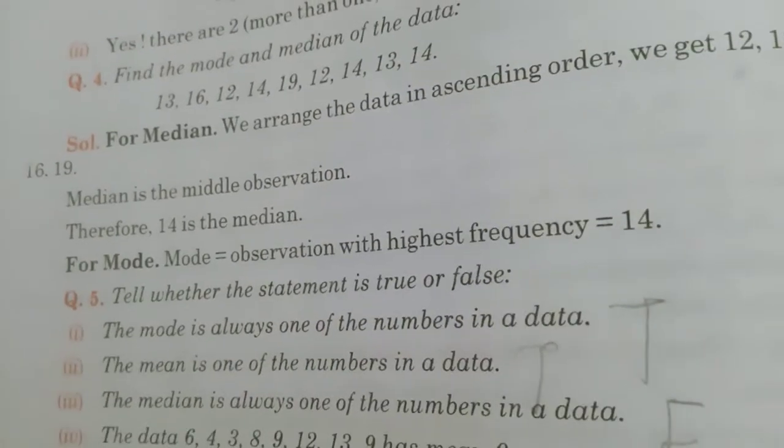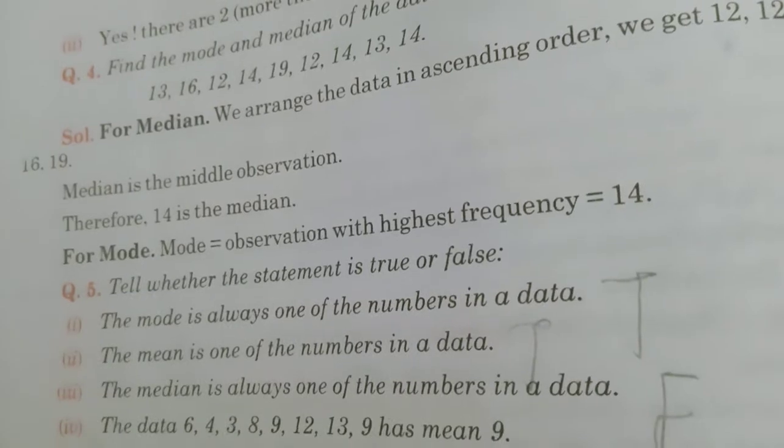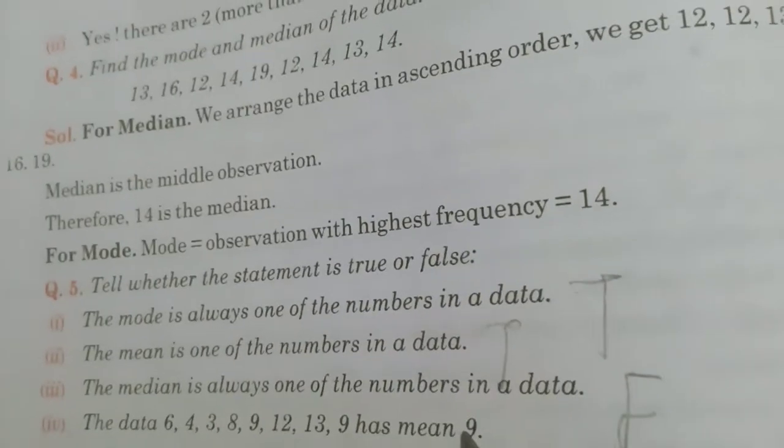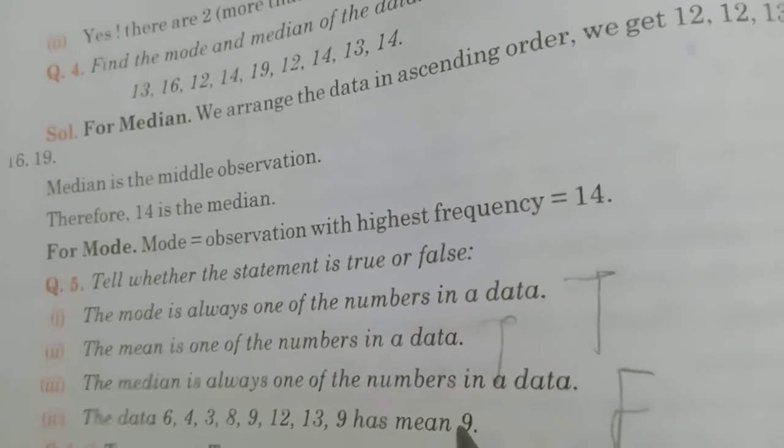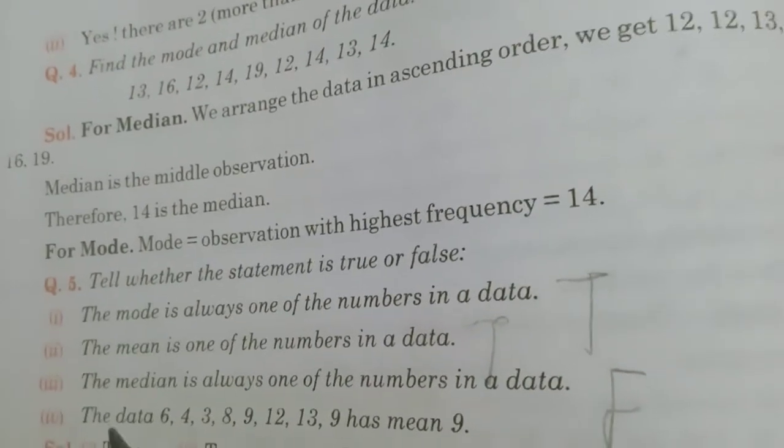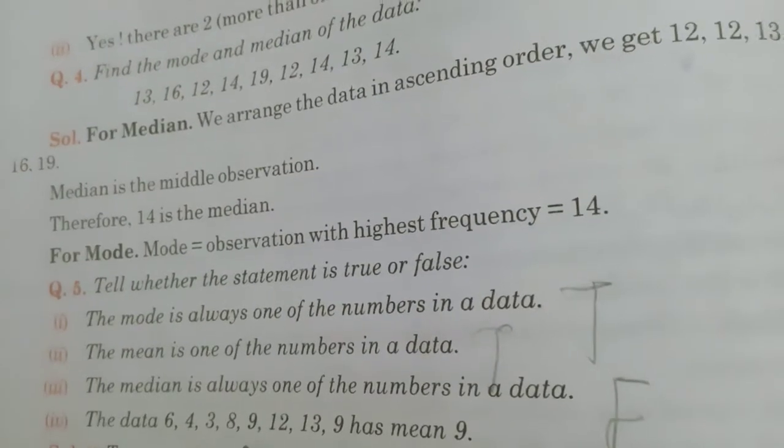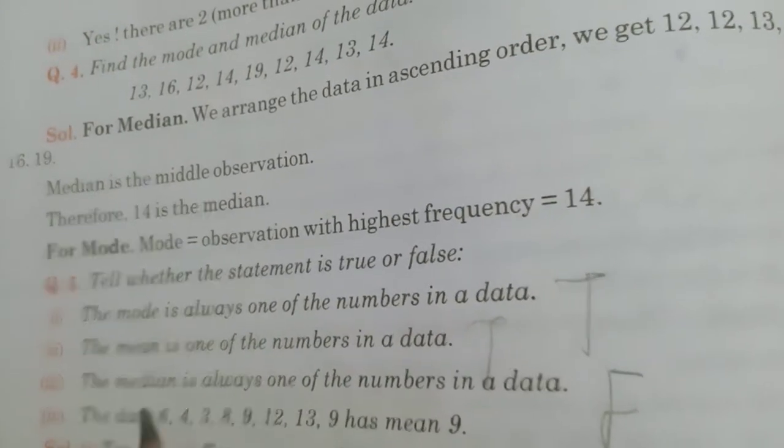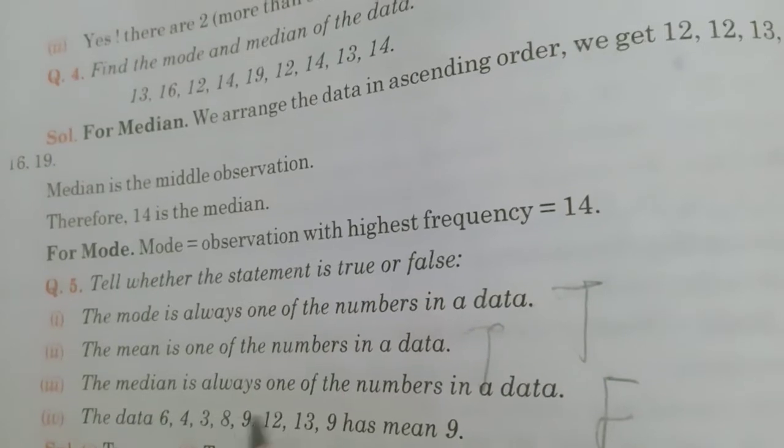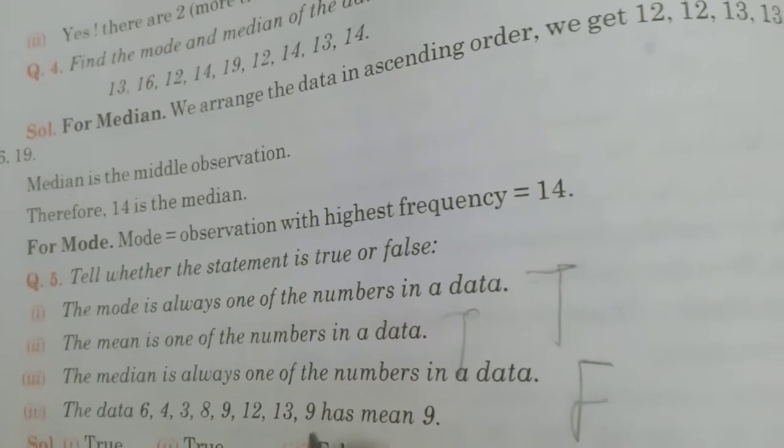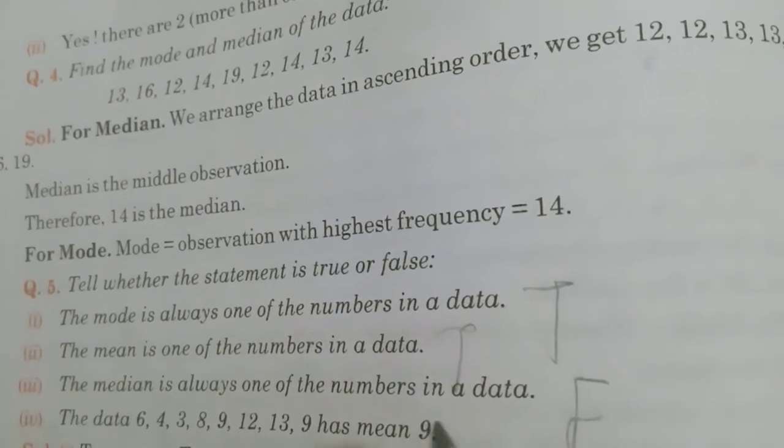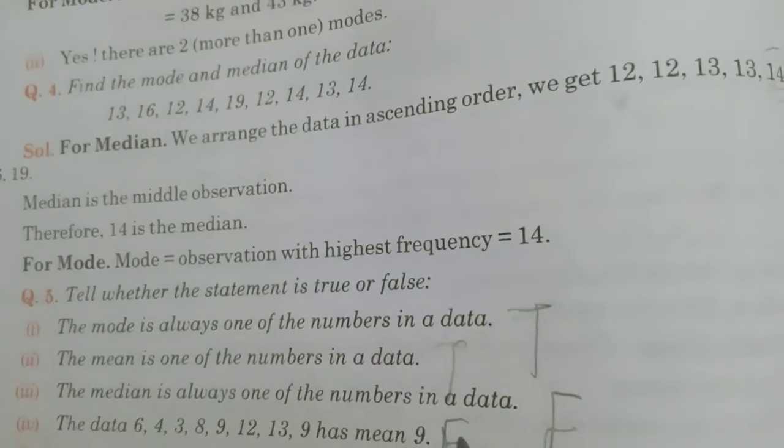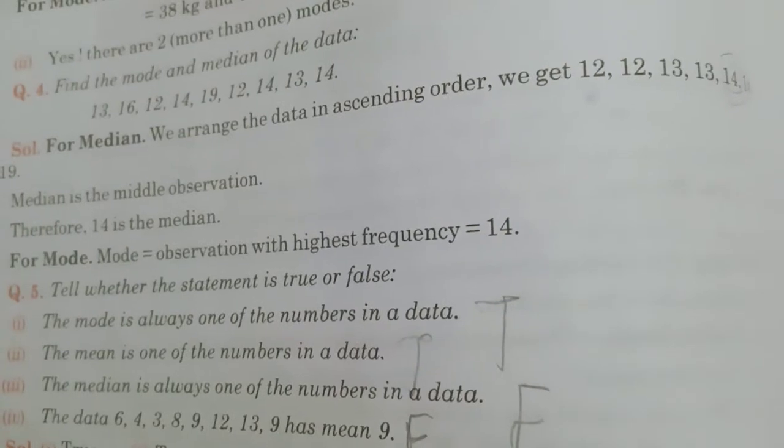And the last one is, the data 6, 4, 3, 8, 9, 12, 13, 9 has mean 9. Now, you have to find mean. Means, add all. 6 plus 4 plus 3 plus 8 plus 9 plus 12 plus 13 plus 9. And divide by 1, 2, 3, 4, 5, 6, 7, 8. Term divided by 8. And find, if it is coming as 9 or not. It will not come 9. Therefore, it will be false. You try yourself for that. Is it clear to you?